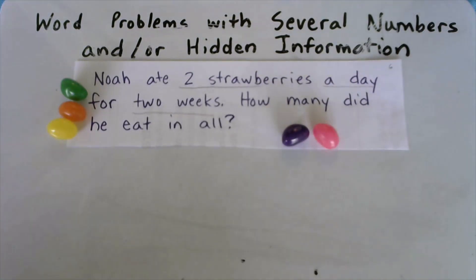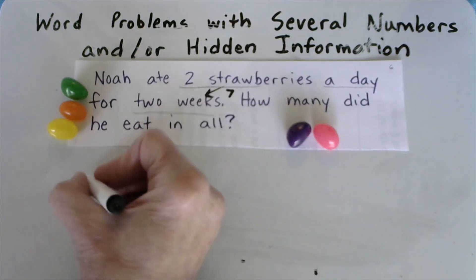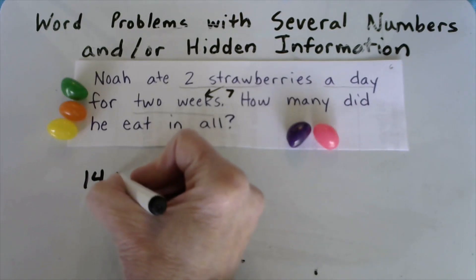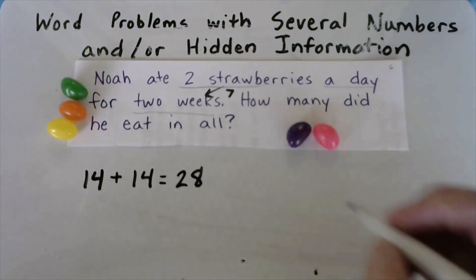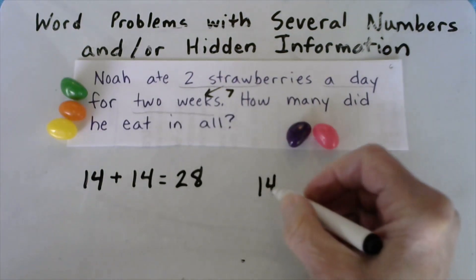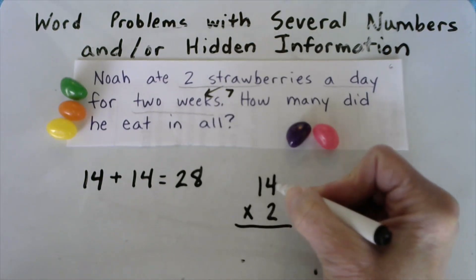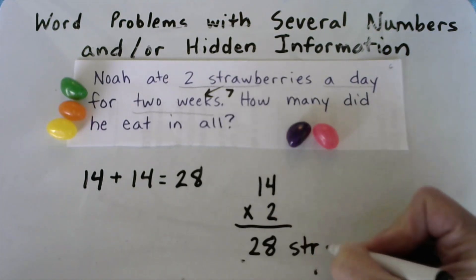You could have solved this in many ways. You could have said two strawberries a day for two weeks. Well, two weeks. How many days are in two weeks? Inside of one week, there's seven days. Inside of two weeks, there's 14 days. And he ate two strawberries on each of those days. So I could do 14 plus another 14 because he ate two a day for 14 days. So this would be the first week's strawberries and this is the second week's strawberries. And I would know that he ate 28. Another way you could have solved it is 14 days in two weeks times two strawberries a day because he ate two strawberries 14 times, and of course you had to write a unit.